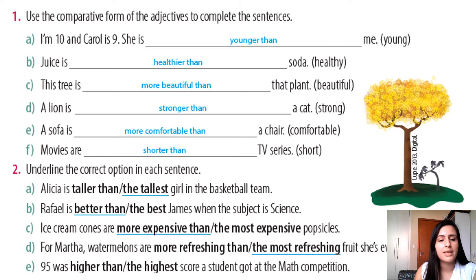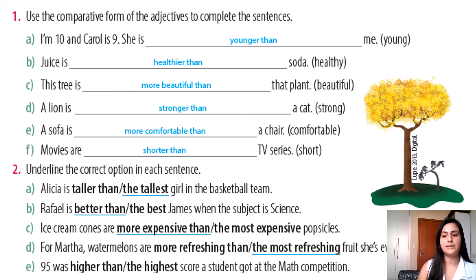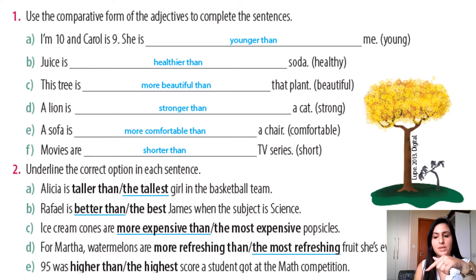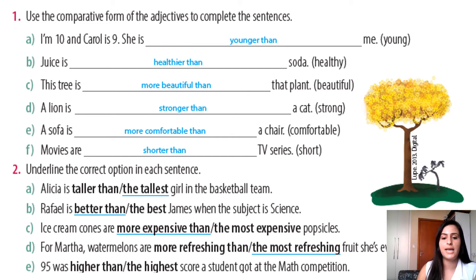Letter E: Ninety-five was the highest score a student got at the math competition. Então, a resposta correta é 'the highest', porque eu estou comparando essa nota com todas as outras. Ninety-five was the highest score — a resposta correta é 'the highest'.